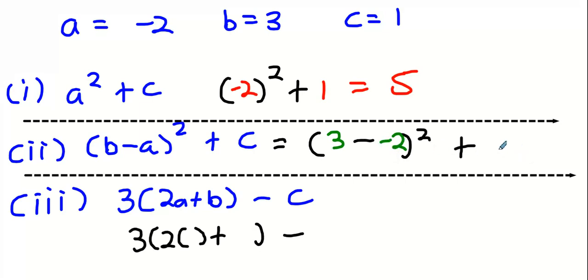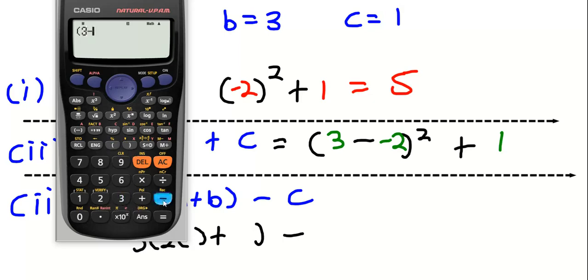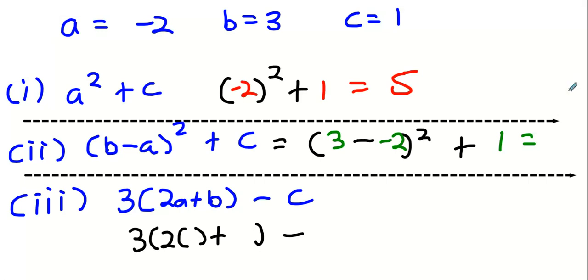And then the C value? One. Go to your calculator. Three minus minus two squared plus one. What do you get? Eight.